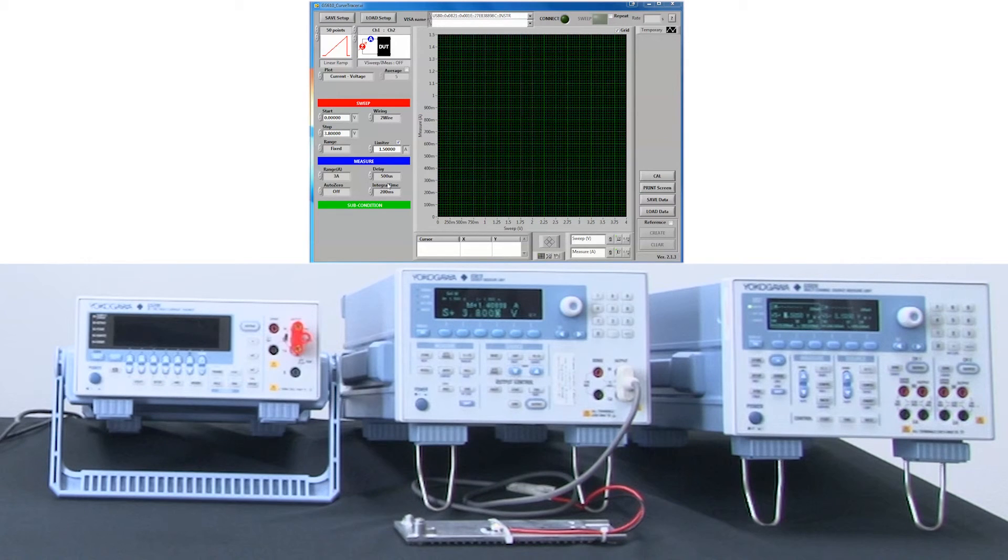I have a limiter set for 1.5 amps. I will pause at each step for 200 milliseconds, let the LED stabilize and then take the measurement with the SMU. Once these settings have each been made, I can press save setup here to save the setup.